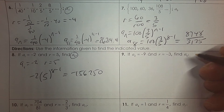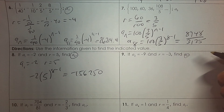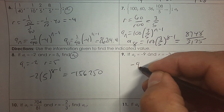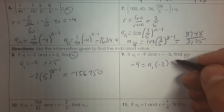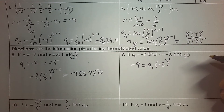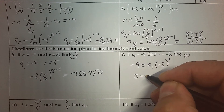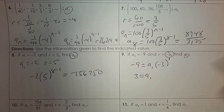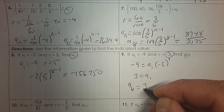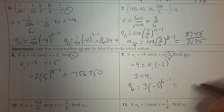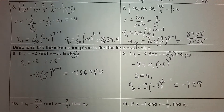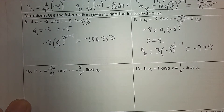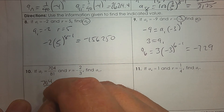Here you're given the second term is negative 9 and the ratio is negative 3 — find the sixth term. Since the second term is negative 9, I don't know the first term, but I know the base is negative 3 and the exponent would be n minus 1, so that's 1. When you divide by negative 3 you get the first term is 3. Now to find the sixth term, start with the first term 3, then negative 3 to the exponent 6 minus 1, use your calculator — you get negative 729.